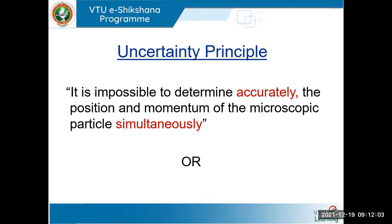The uncertainty principle can be stated in many ways, but I will cover three important types. First: it is impossible to determine accurately the position and momentum of a microscopic particle simultaneously. The keywords here are 'accurately' and 'simultaneously' — we cannot get the exact value of both position and momentum at the same time. If you forget these two words, there is no meaning to the uncertainty principle at all.